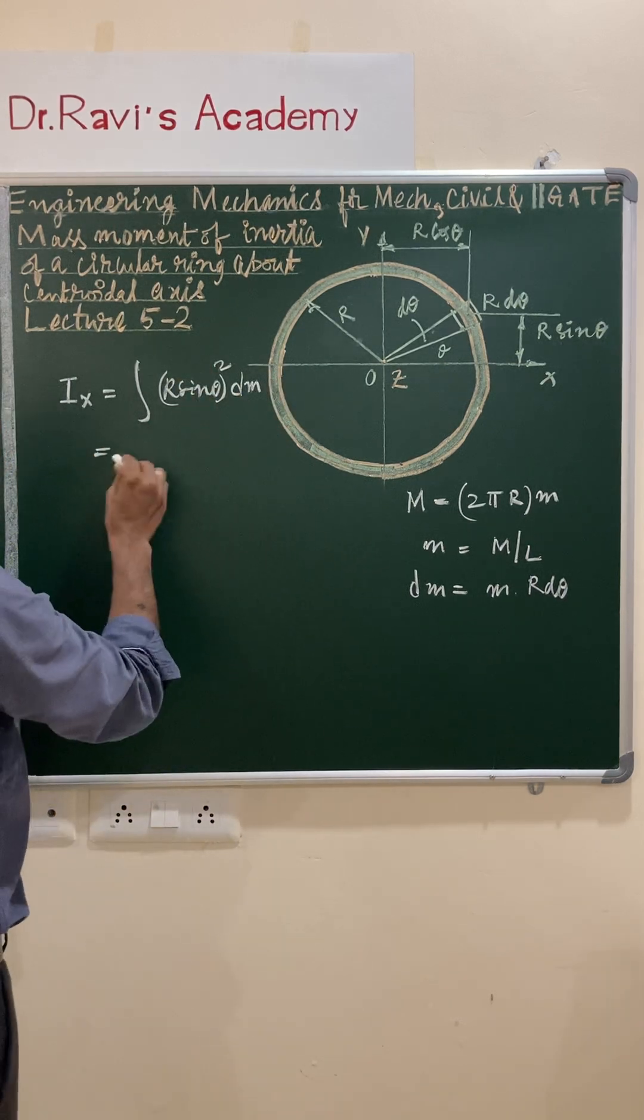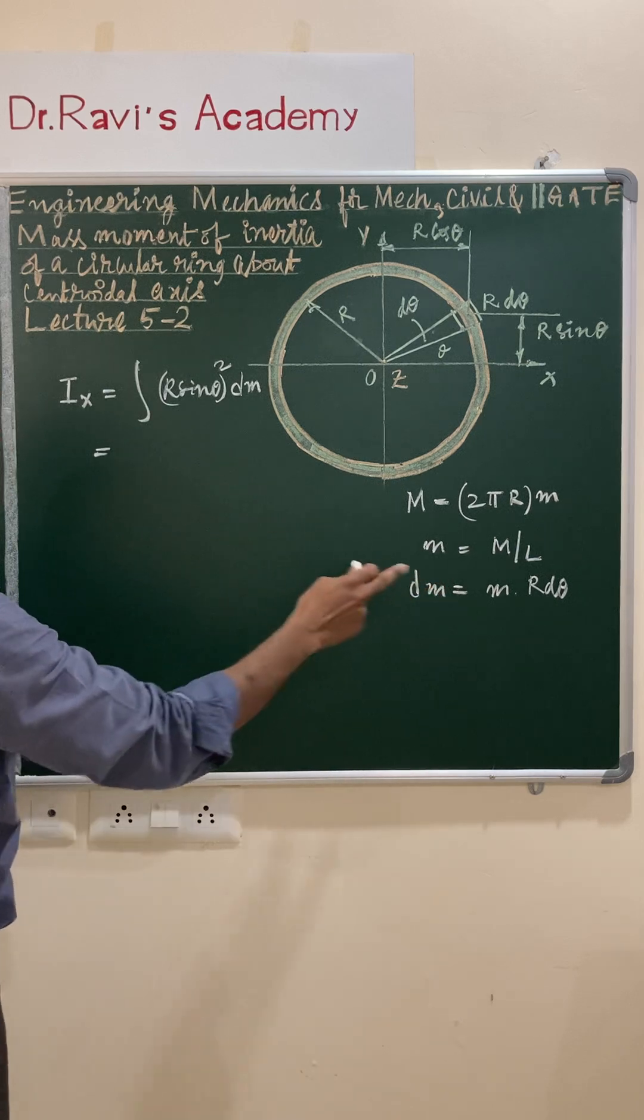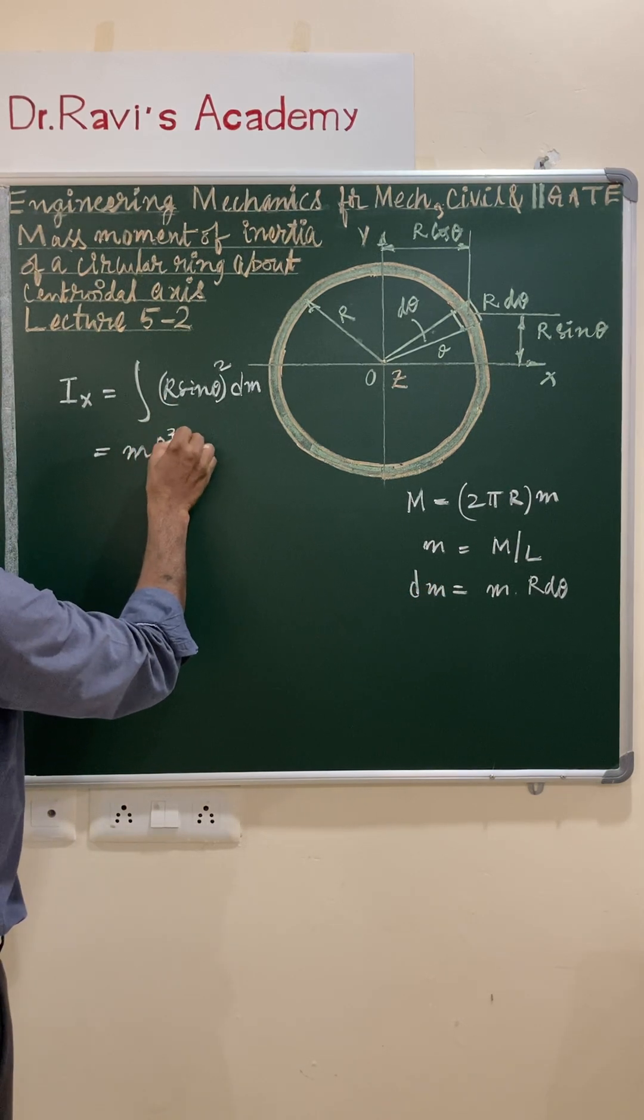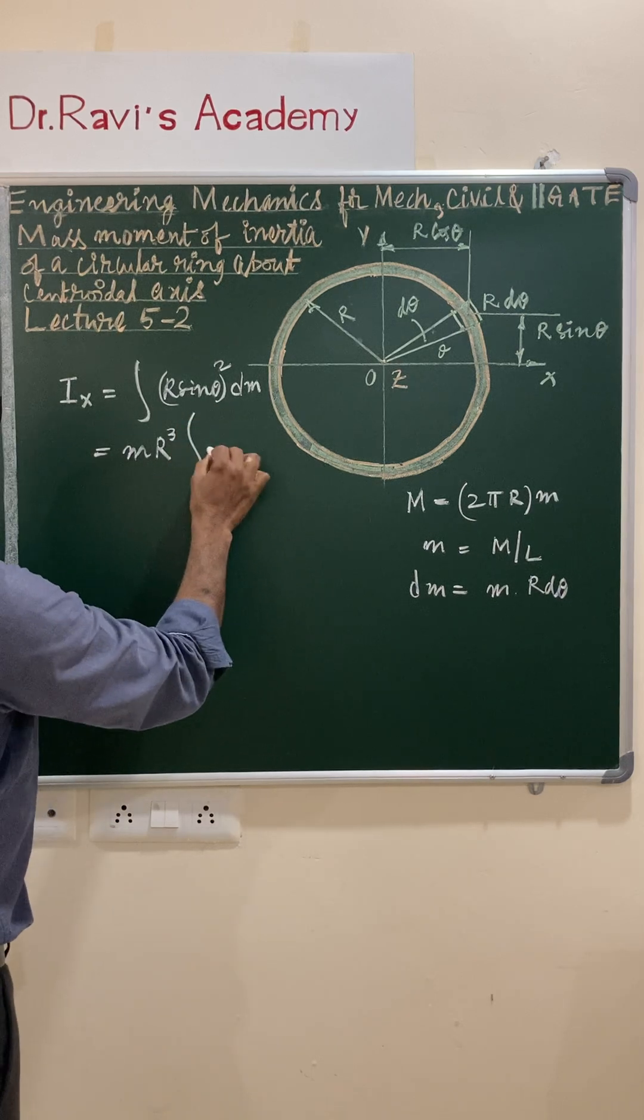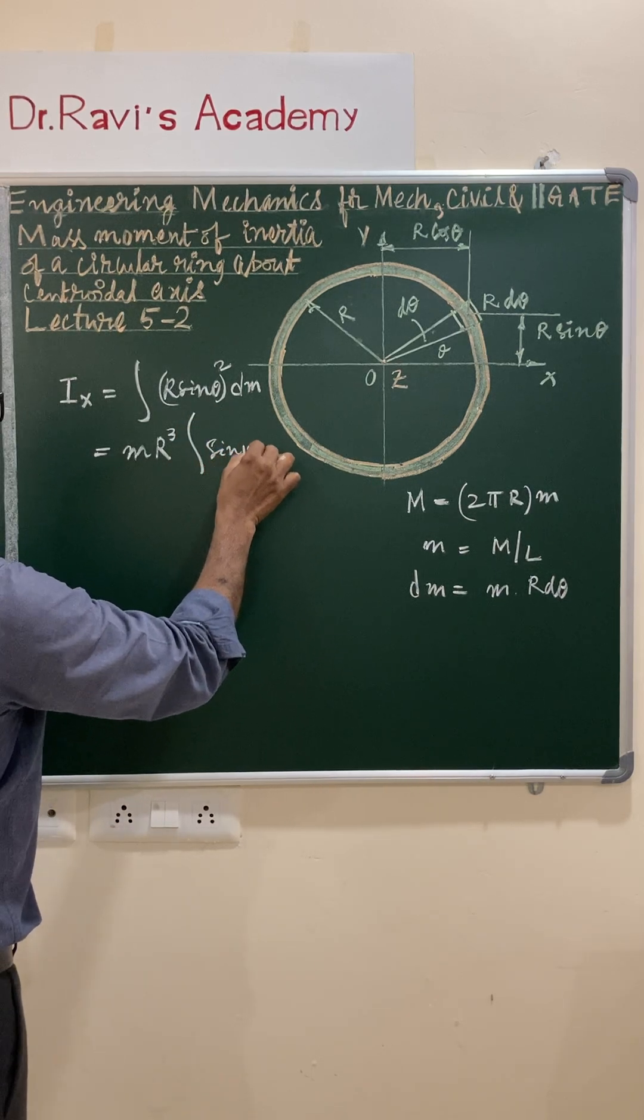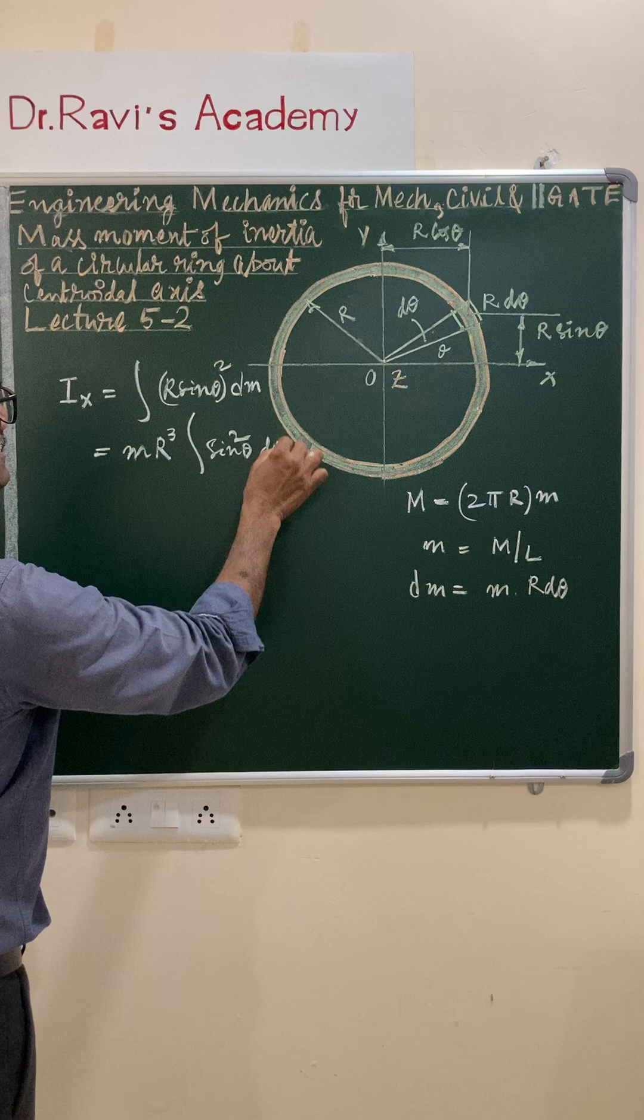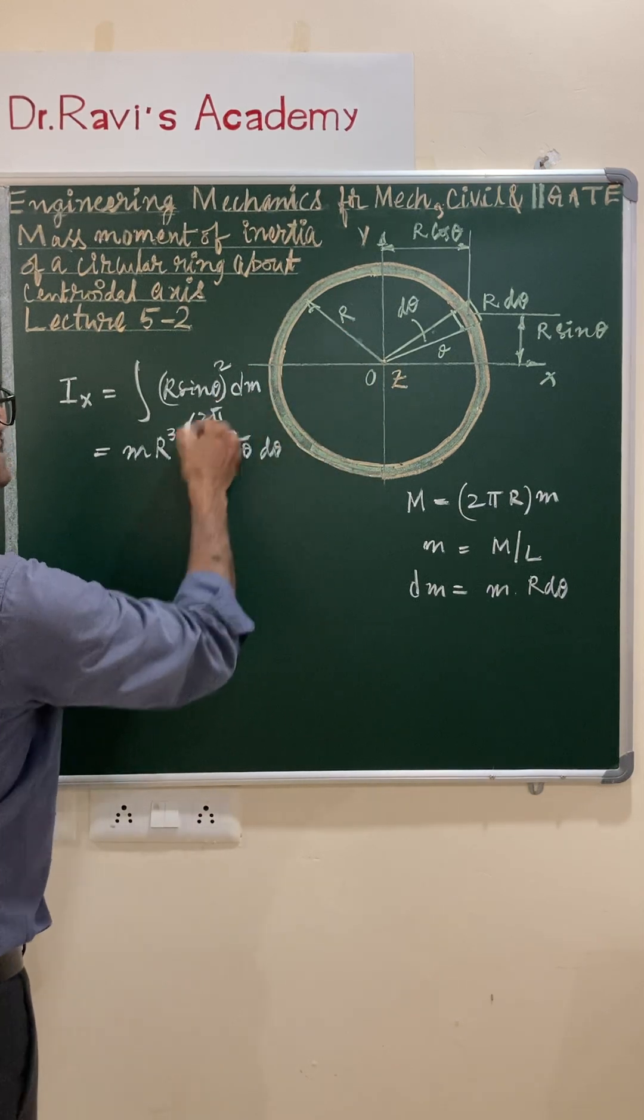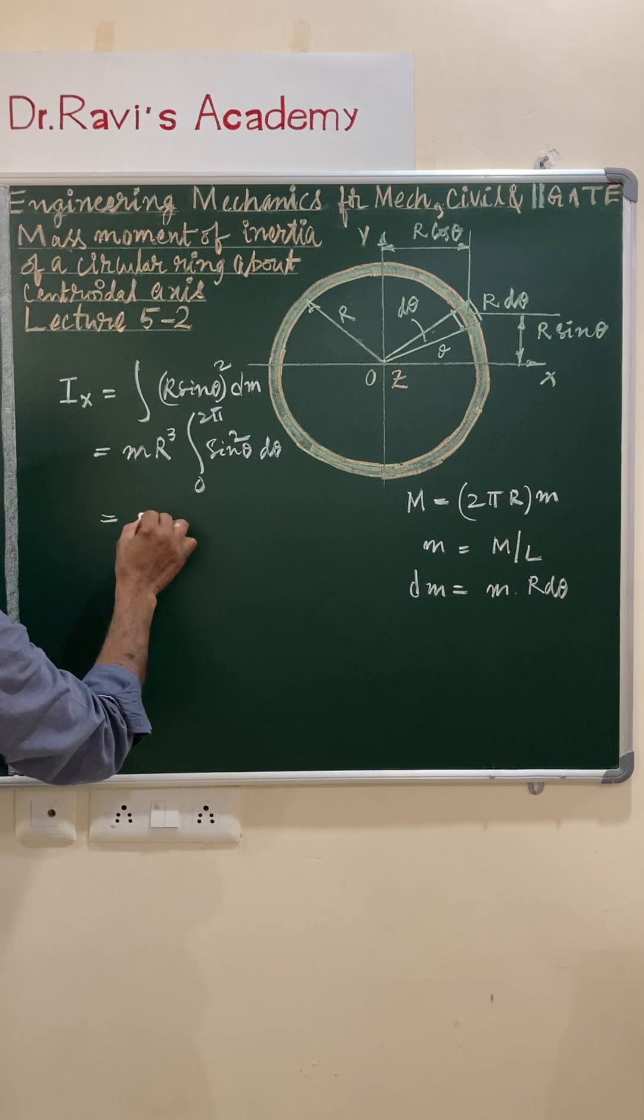Substitute dm value. You have m is constant and r is constant, this is r². So you are going to get mr³ which is outside, and integral sin²θ dθ with limits 0 to 2π. And this is a standard integration and the value is π.